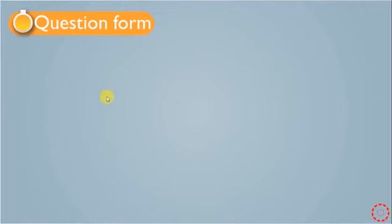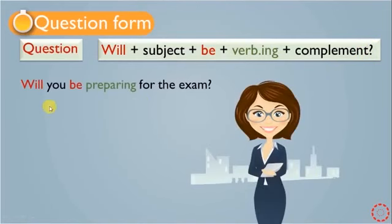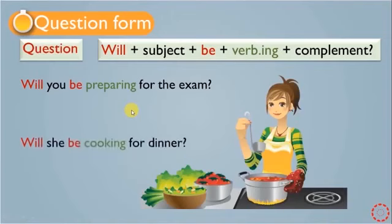Now let's talk about the question form of Future Continuous. How can we make a question? We move 'will' and put it at the beginning of the sentence, before the subject. After the subject, we have 'be', followed by verb+ing, and then the complement. Remember to put a question mark at the end. For example: 'Will you be preparing for the exam?' — 'will' is at the beginning. Another example: 'Will she be cooking for dinner?' This is the question form of Future Continuous.